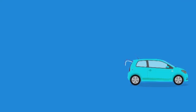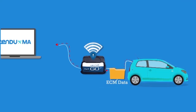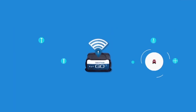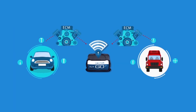The Geotab device has the ability to pull different asset information directly from the ECM port. It pulls information like odometer reading and engine faults and sends that information into the MyGeotab software. Zendoo MA then pulls that information and inputs it into the Zendoo MA add-in, using this information to automatically schedule preventative maintenance.